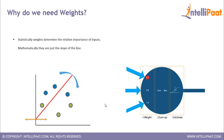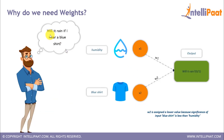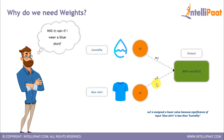Now let's understand the concept behind these weights. Weights basically determine the relative importance of the inputs. For example, if we have two inputs — humidity and wearing a blue shirt — we can see that wearing a blue shirt has almost no correlation with the possibility of rainfall. That is why the weight assigned to input x2 would be low, in order to bring down its importance.